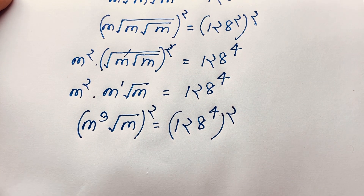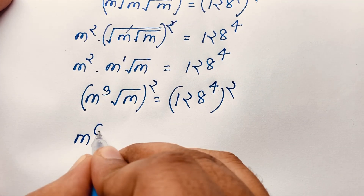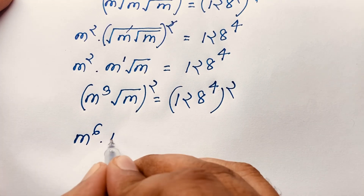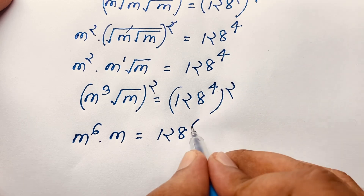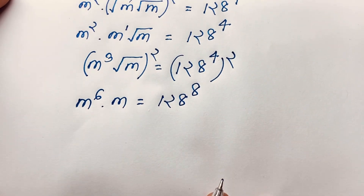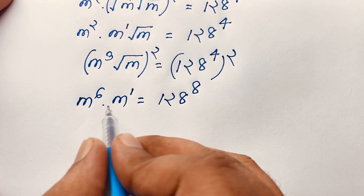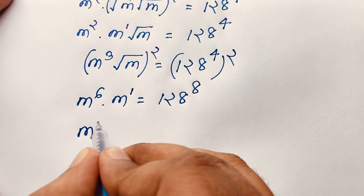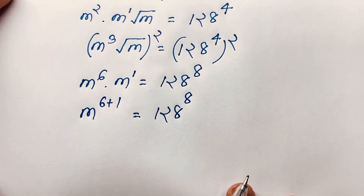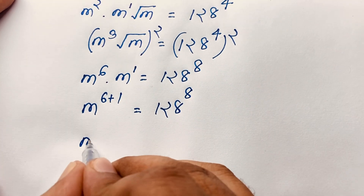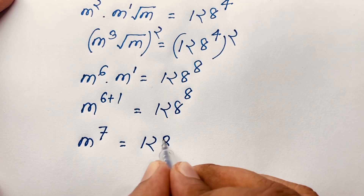Now 2 times 4 is 8. You can see m to the power 2 times 3 equals 6, and the square root cancels, giving m equals 128 to the power 8. Now both side exponents: I see m to the power 1 plus 6, which is m to the power 7, equals 128 to the power 8.